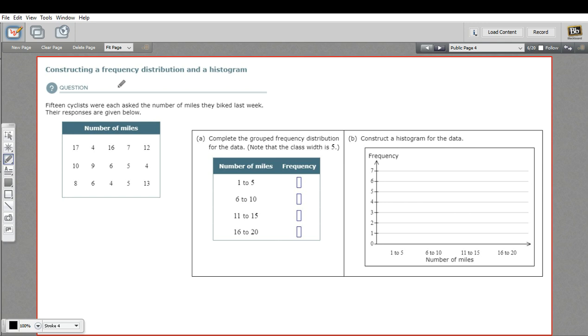We're going to create what's called a frequency distribution. And then we're going to create a histogram. And a histogram is just a fancy name for a graph, in this case, a bar graph that represents that set of data.